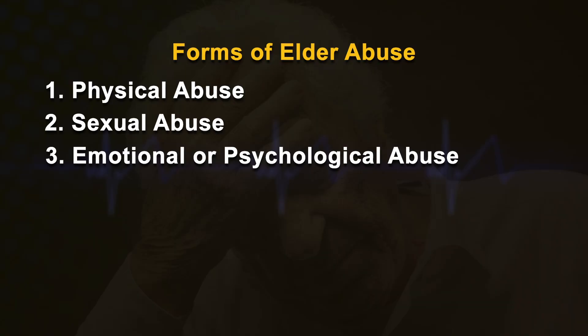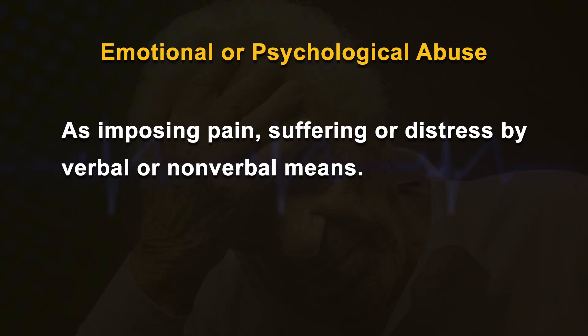Sexual abuse of an elderly person is defined as having non-consensual sex with an older person. Emotional or psychological abuse is defined as imposing pain, suffering or distress by verbal or non-verbal means. This can include insulting, verbal assaults, humiliating, threatening, intimidating or harassing the elder. During emotional abuse, the elderly person is often treated like a child and isolated from activities and family members.